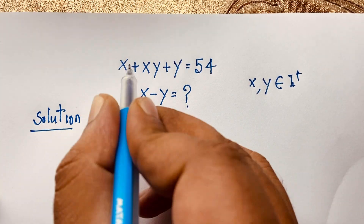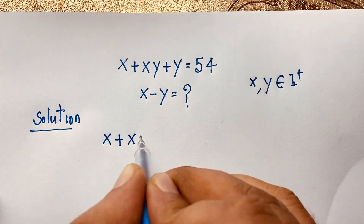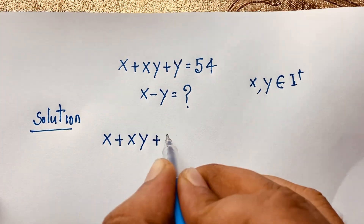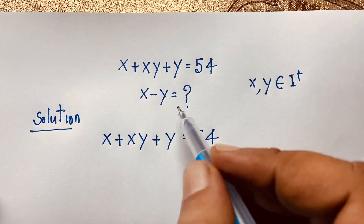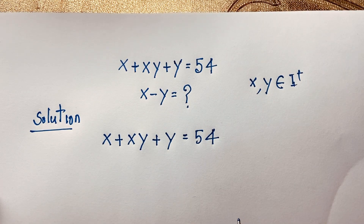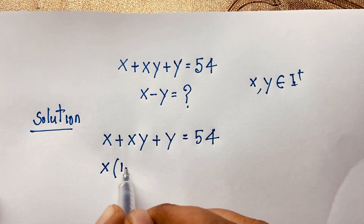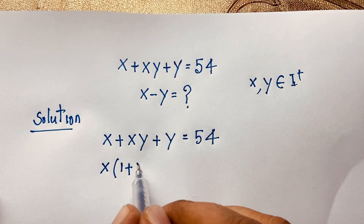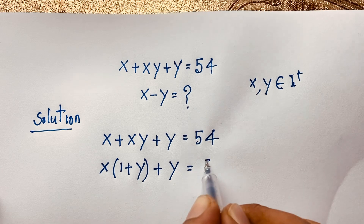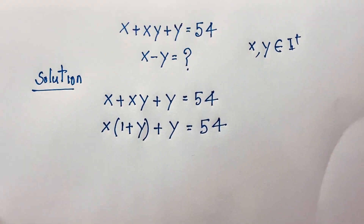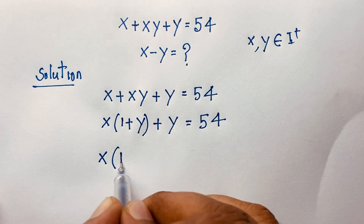Our equation is x plus xy plus y equals 54, and our target is to find x minus y. First, x is common in the first two terms, so we factor: x times (1 plus y), plus y equals 54.